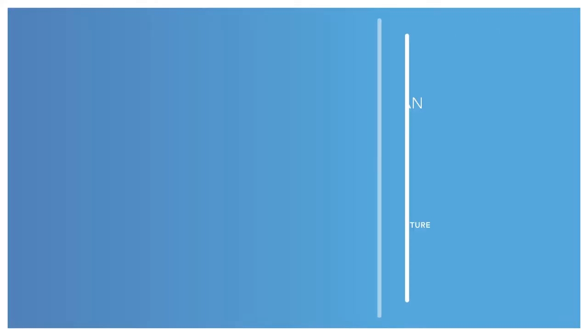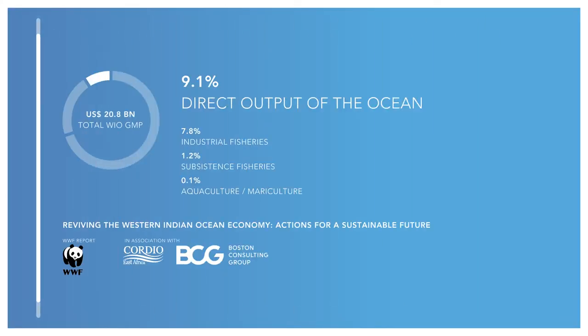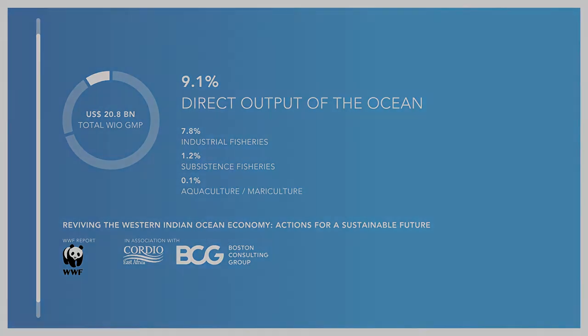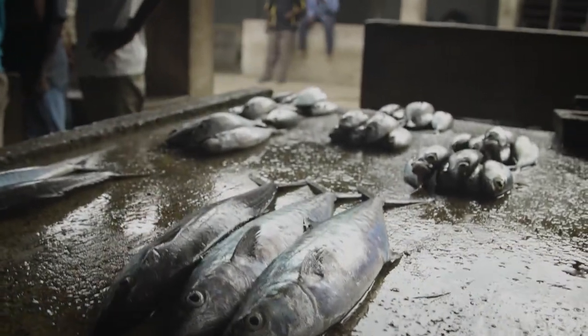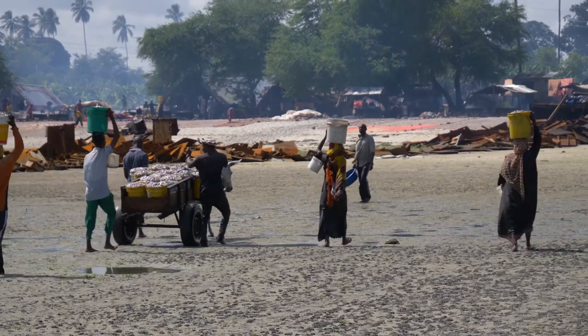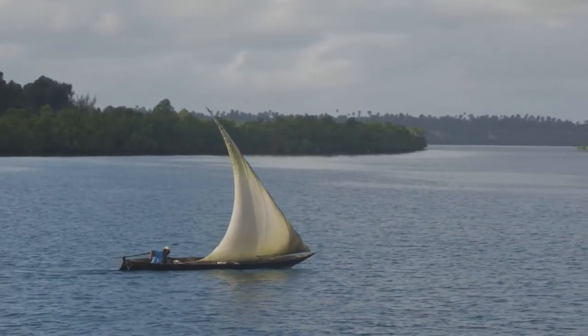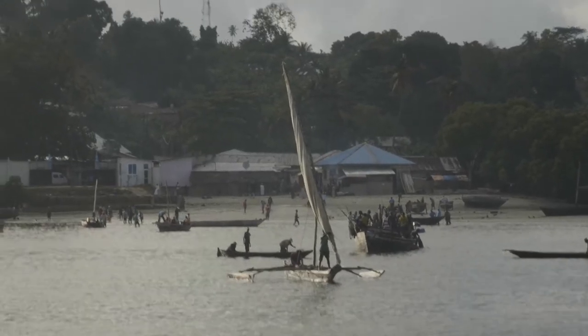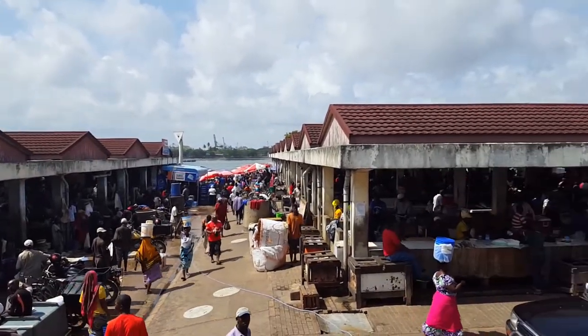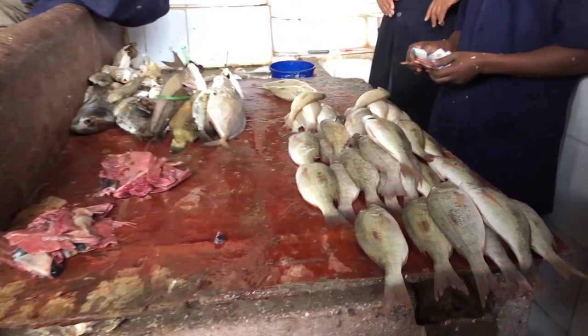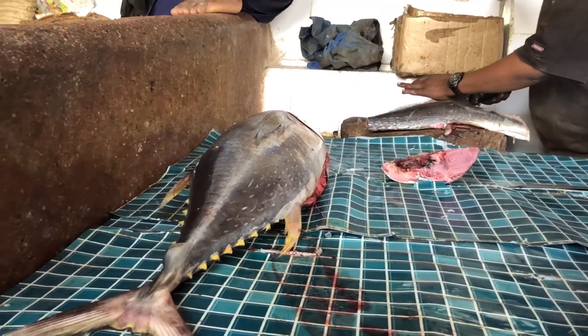Fisheries, in the category of direct output of the ocean, generate 9% of the gross marine product. Of this total value, 87% are the large-scale and industrial fisheries. Artisanal fisheries constitute only 13% of the direct output of the ocean, or just 1% of the gross marine product of the Western Indian Ocean. However, this number does not give the full story. This sector is estimated to support over a quarter of a million fishermen in the region. Considering that the dependency ratio in the region is 7 to 1, more than 1.5 million people are directly dependent on artisanal fisheries for their livelihood. The high social and non-monetary value of this fishery is not captured in this analysis. These fisheries are poorly documented and under-reported, often not captured in national statistics and accounts.